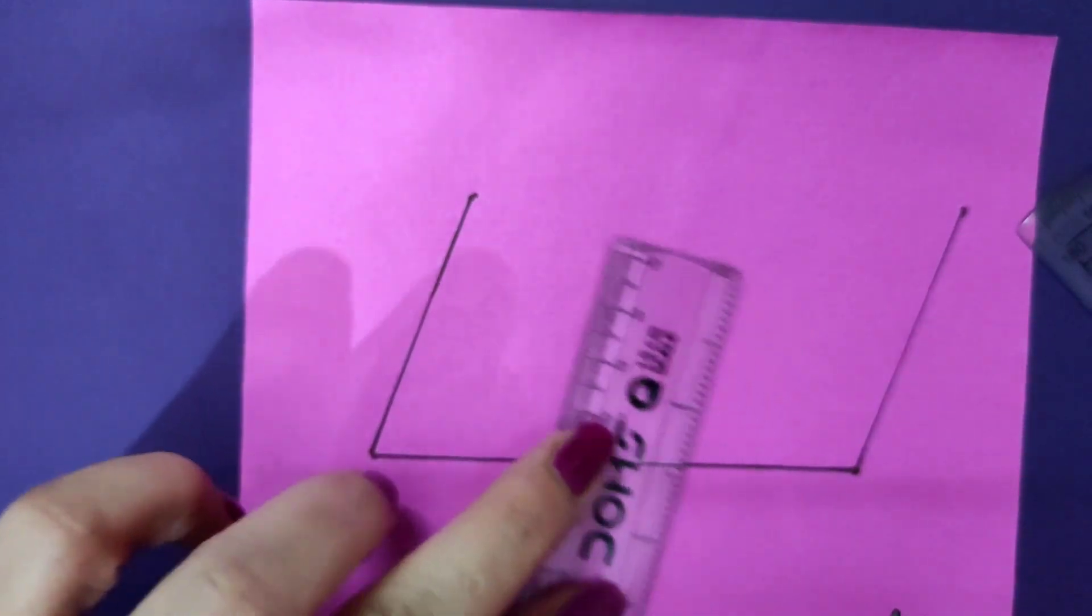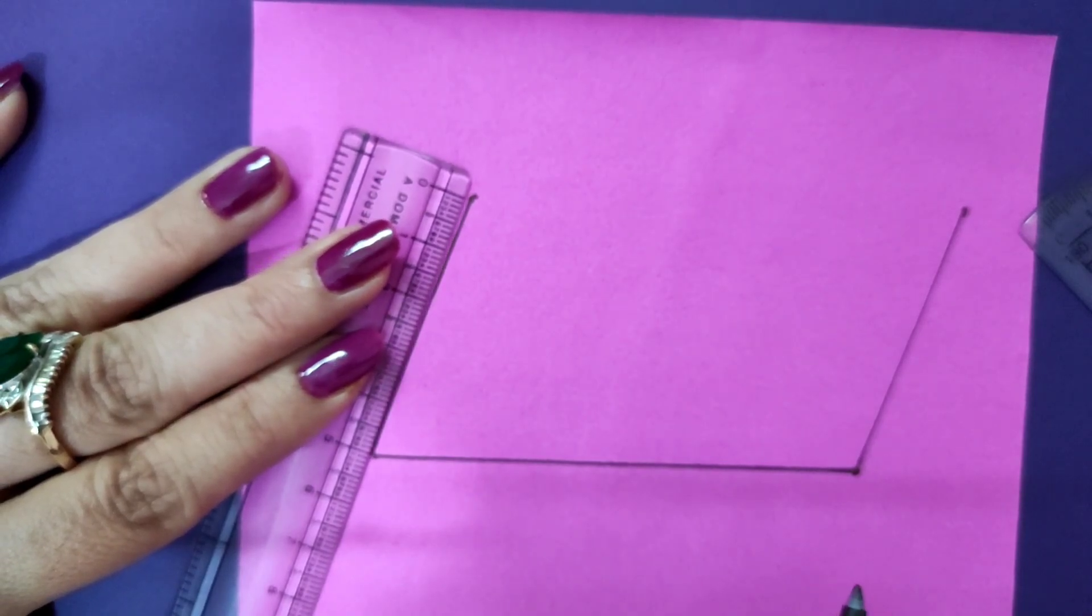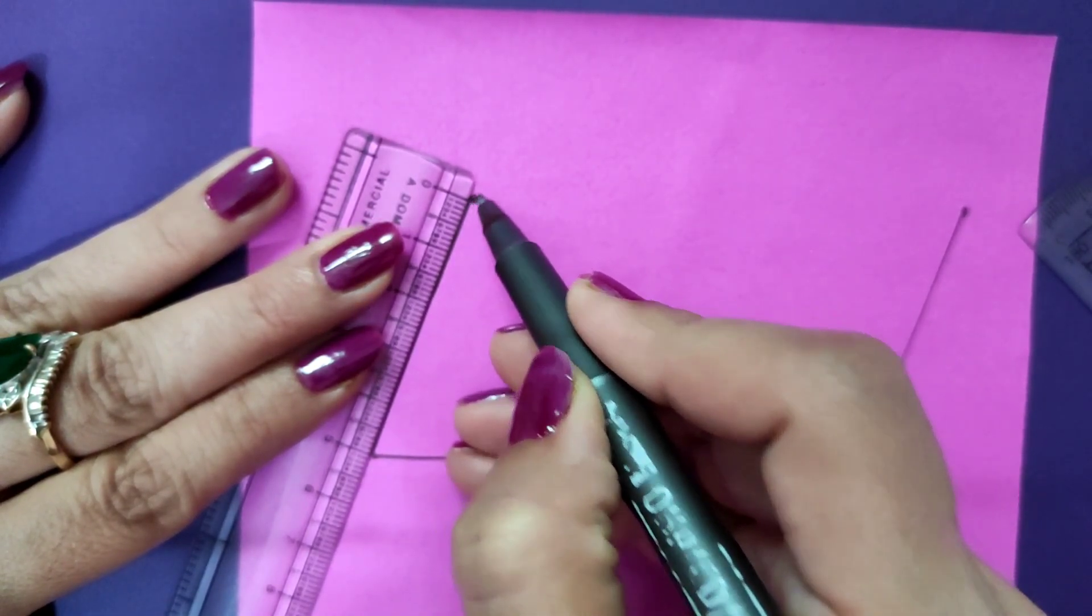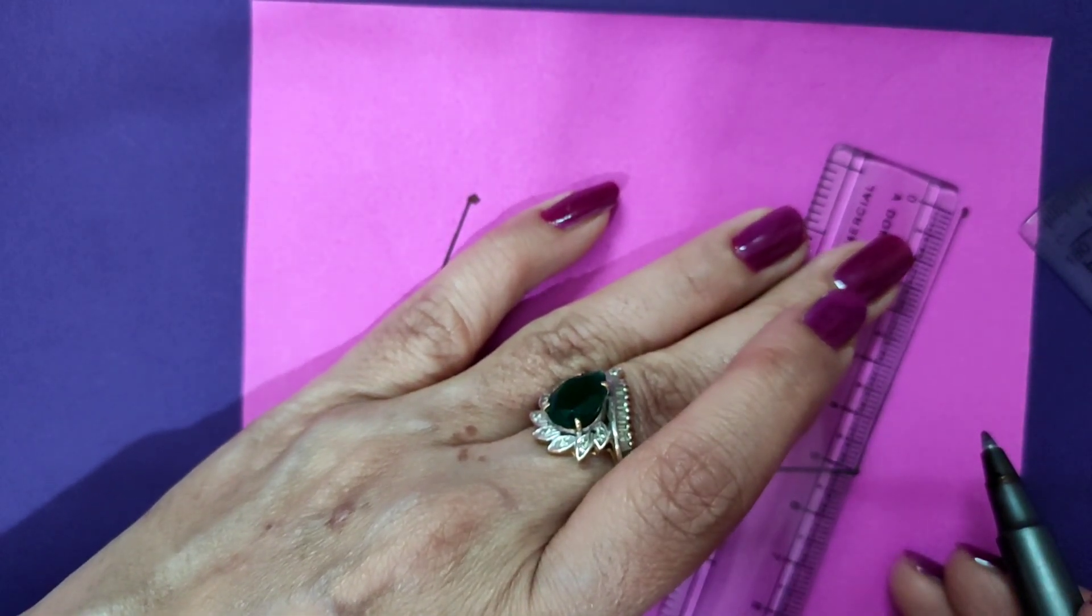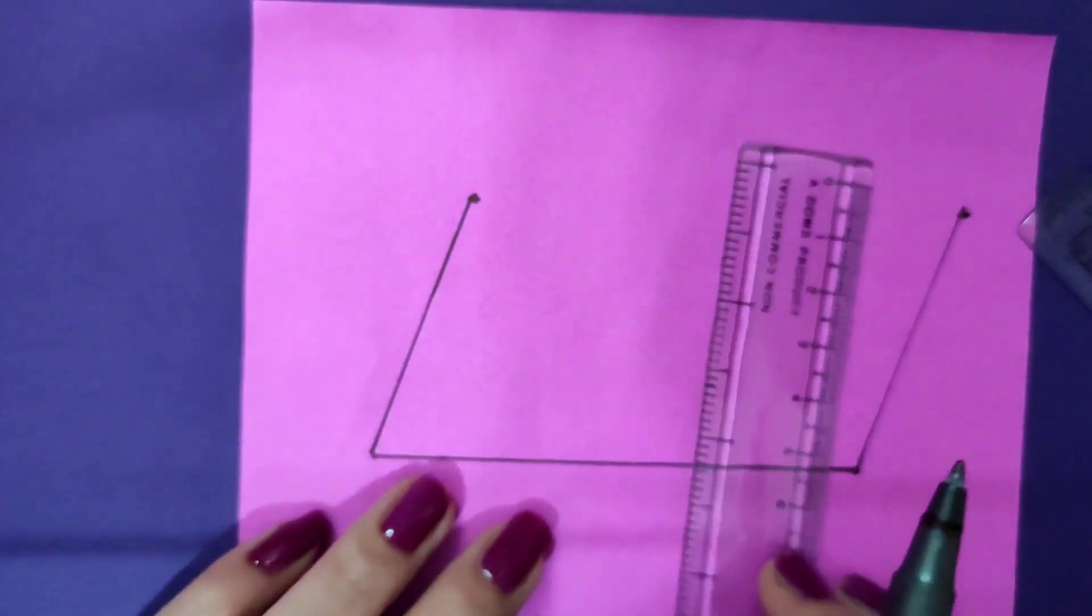Now I take the ruler once again and measure 5 cm. I could have taken any dimensions, but if I'm taking 5 cm from here, this side also should be 5 cm. So I take 5 cm from this side also and join them.